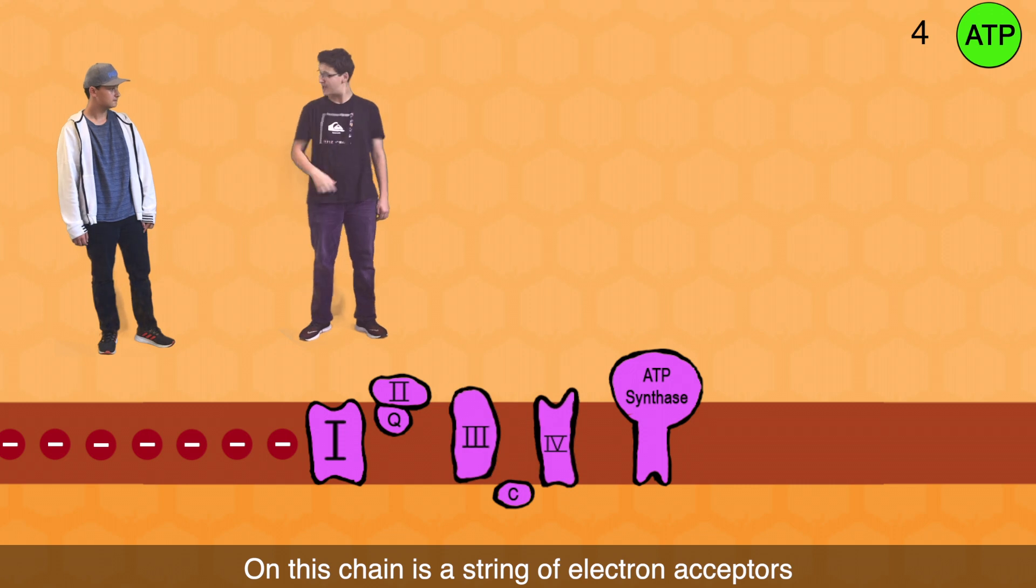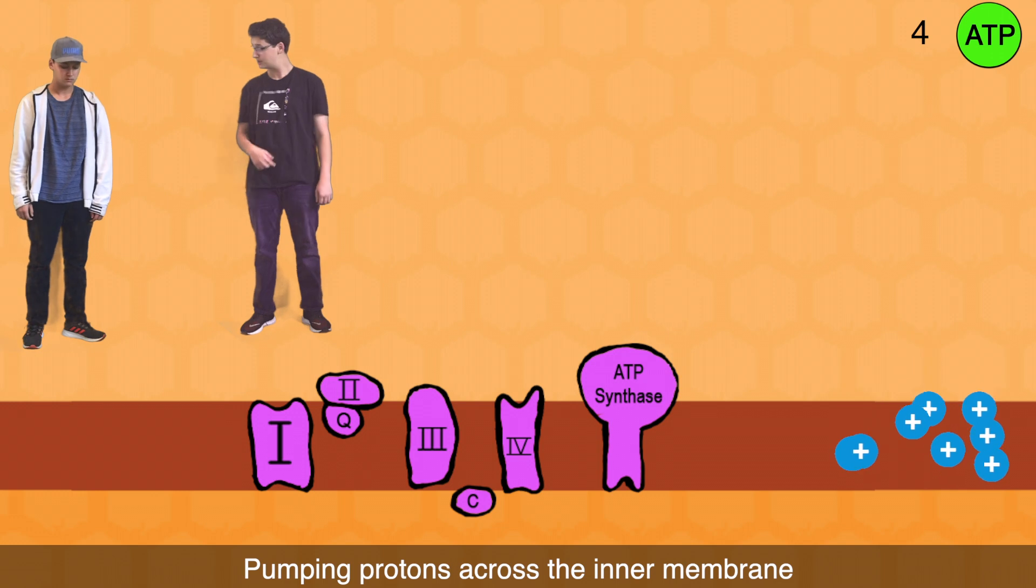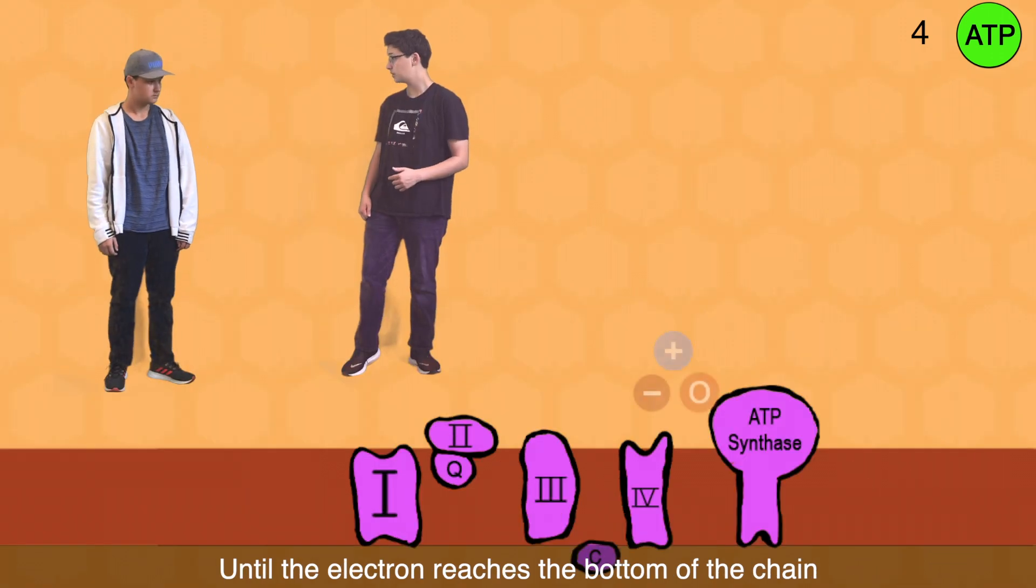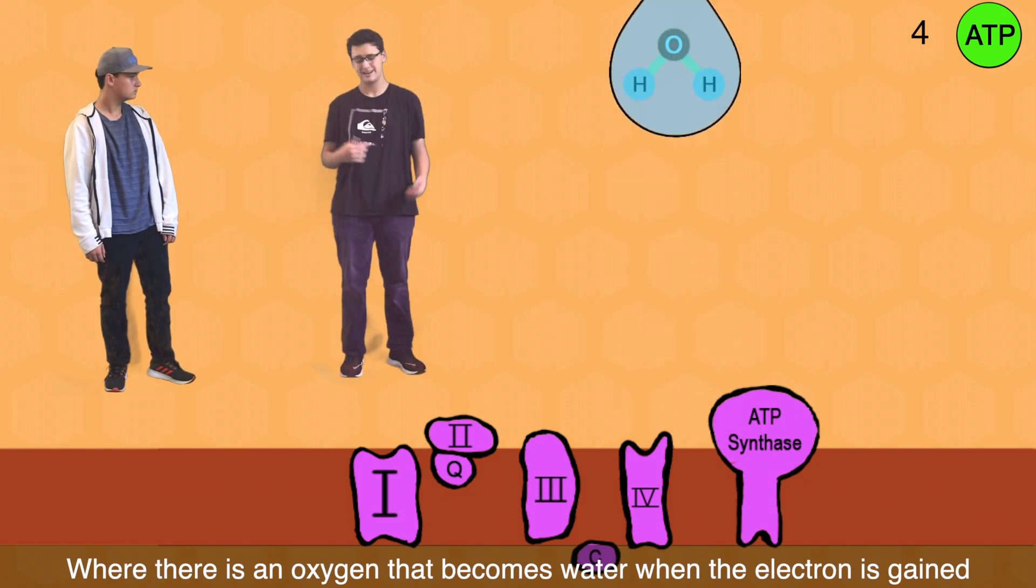I gotcha. On this chain is a string of electron acceptors. And as it goes down it releases energy to use for pumping protons across the inner membrane. Until the electron reaches the bottom of the chain. Right there. Where there is an oxygen that becomes water when the electron is gained.